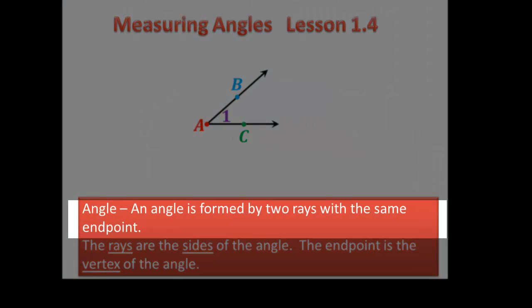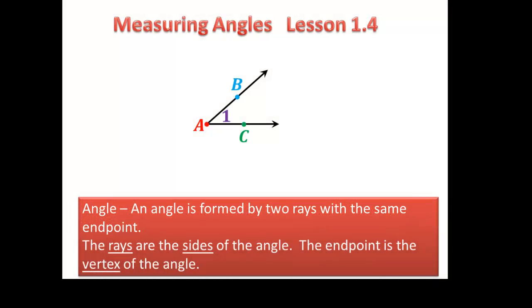First, let's take a step back and talk about the definition of an angle. An angle is formed by two rays with the same endpoint. So taking a look at this diagram here, we have ray AB and ray AC. These rays are called the sides of the angle. And this point right here, point A, is called the vertex.